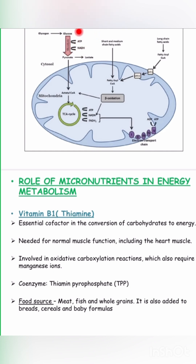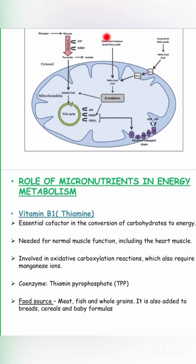So this process of conversion of glucose to ATP — glucose to pyruvate, pyruvate to acetyl-CoA, acetyl-CoA to ATP — this is called aerobic respiration. The whole process of aerobic respiration requires multiple coenzymes like NADH and FADH2, and without these coenzymes it's difficult to extract ATP from glucose.